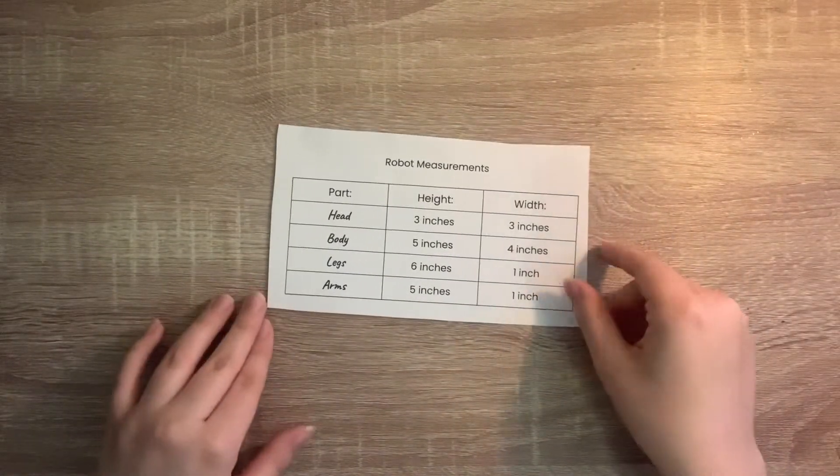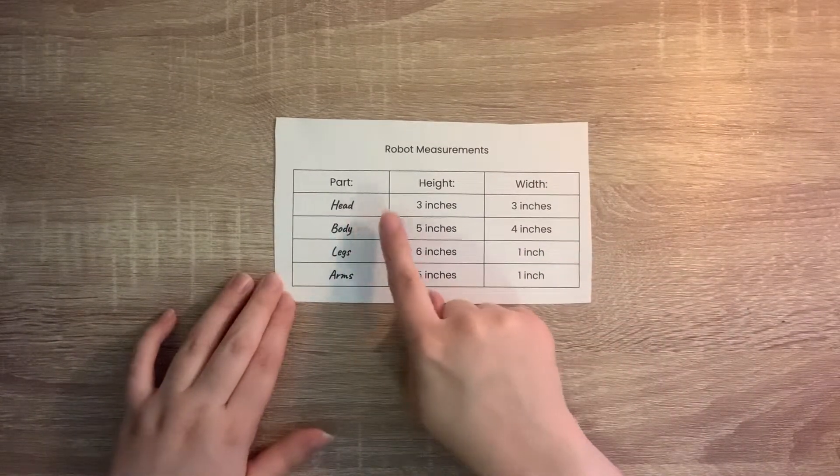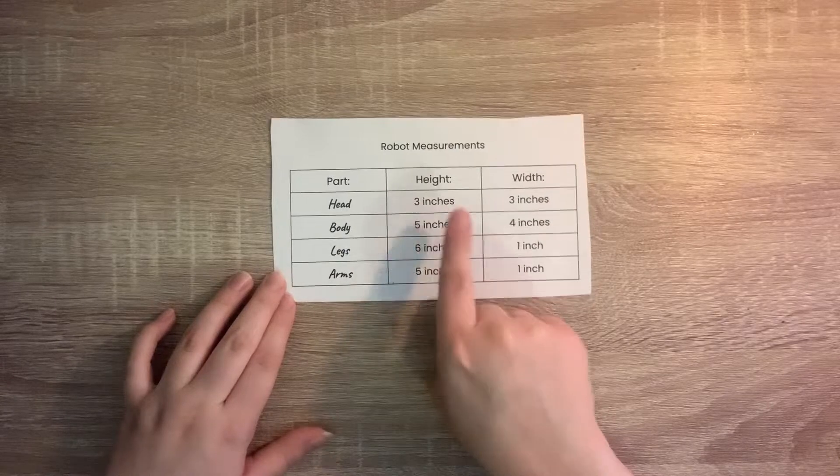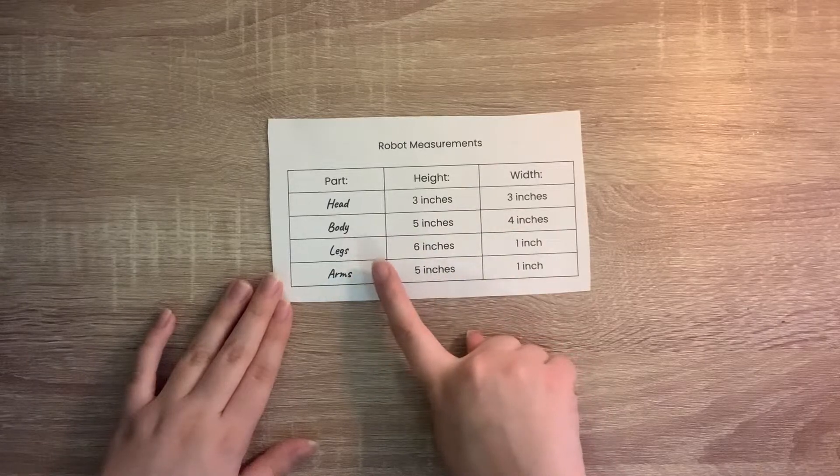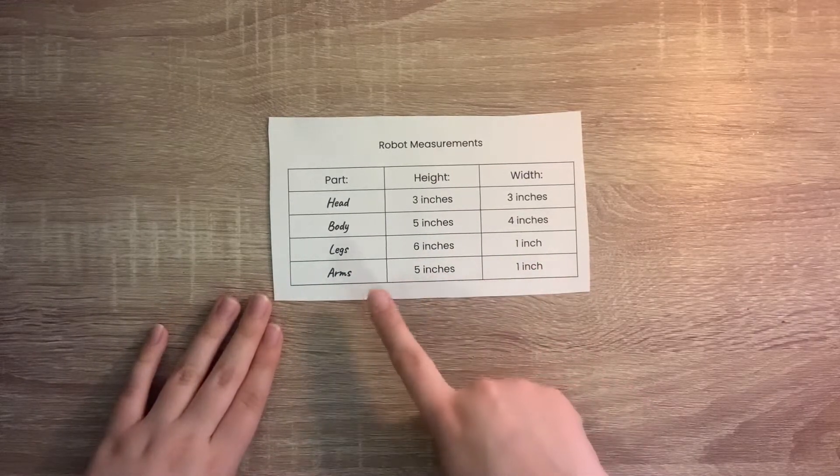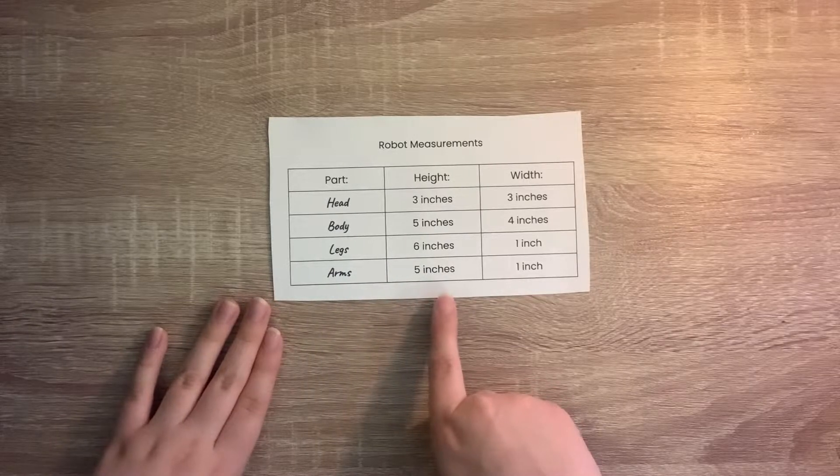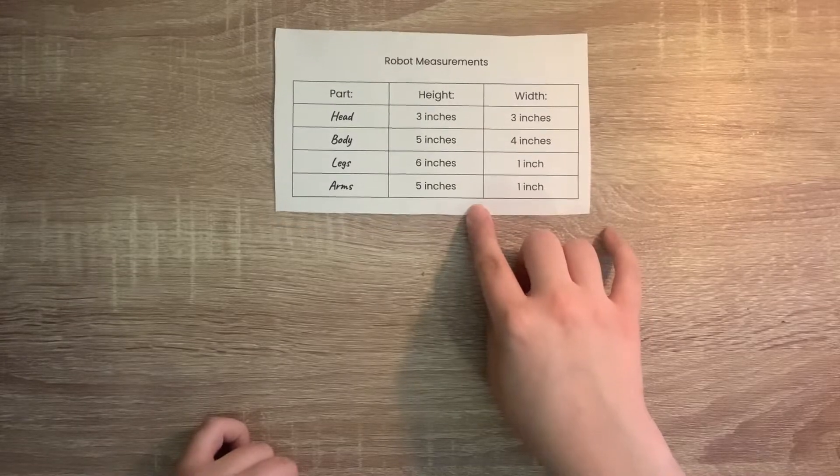Here I have the sheet with some measurements for our robot. We are going to create a head that is 3 inches tall and 3 inches wide, a body that is 5 inches tall and 4 inches wide, legs that are 6 inches tall and 1 inch wide, and arms that are 5 inches tall and 1 inch wide. We're going to use this for our measurements.